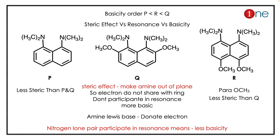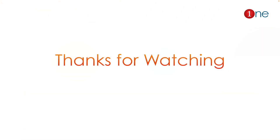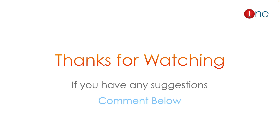Then comes R, because it has less steric effect than Q but the steric approach of the compound is still present. P has the least steric effect when compared to Q and R, so the basicity order is P > R > Q. The key concept here is that steric effect influences basicity — more steric effect pushes the nitrogen out of the plane and increases basicity. That's all from this video, thanks for watching.